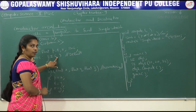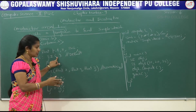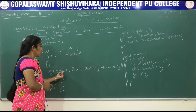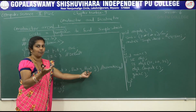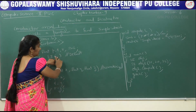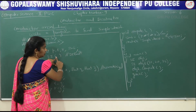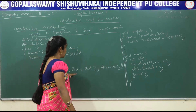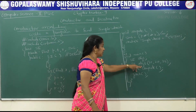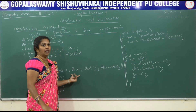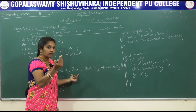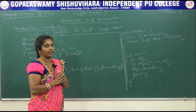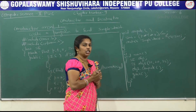In this case, the default constructor has zero arguments, whereas the parameterized constructor has three arguments of float data type. Depending upon the number of arguments as well as the data type, the compiler will decide which version of the constructor to be executed. These are the things you have to study in this chapter.